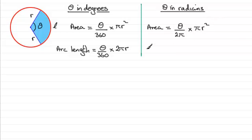And when it comes to the arc length, the arc length will be the same kind of thing. Fraction theta out of 2 pi radians of the circumference, 2 pi r.